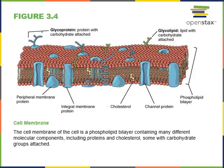The phospholipid bilayer creates a semi-permeable barrier that prevents water-soluble chemicals from freely diffusing in and out of the cell. However, channel proteins embedded in the plasma membrane enable water-soluble chemicals to pass through, and these channel proteins allow the cell to regulate what chemicals are able to cross the plasma membrane.